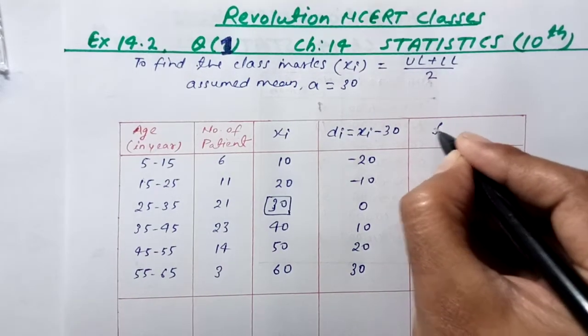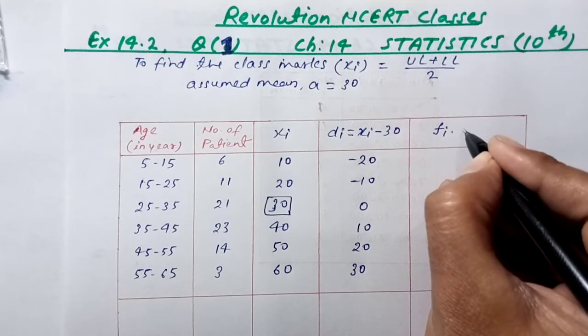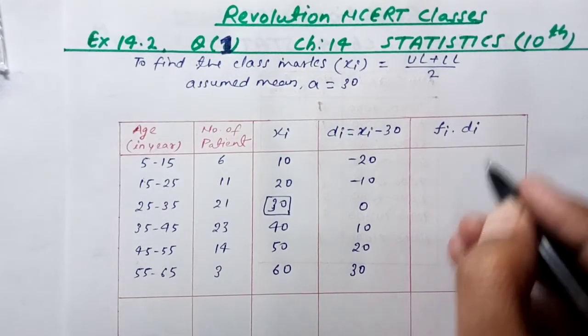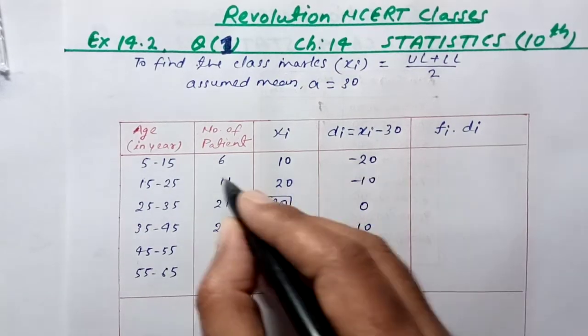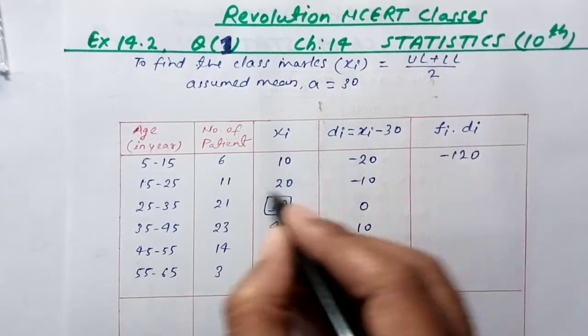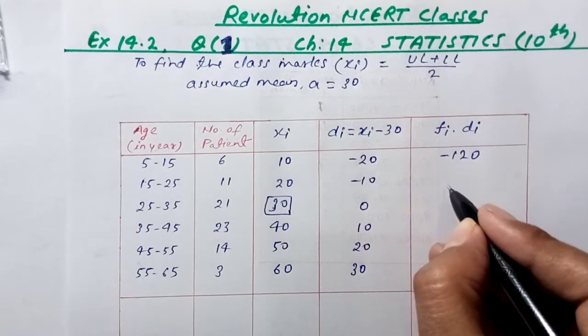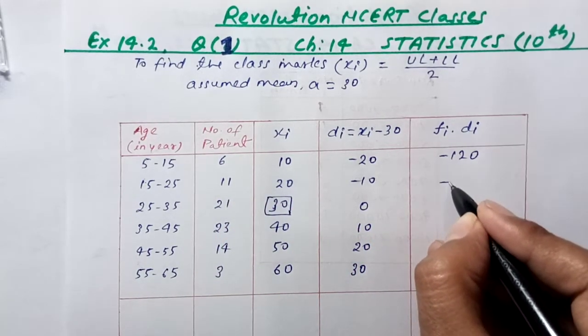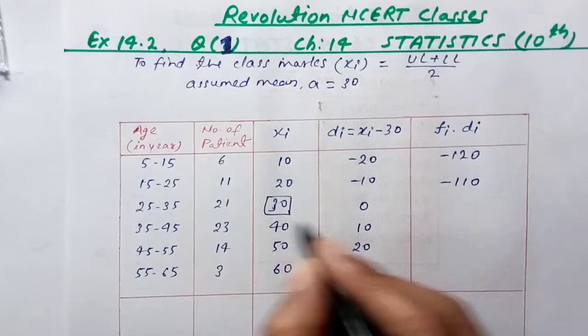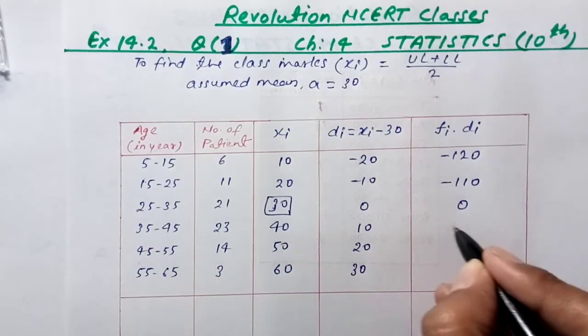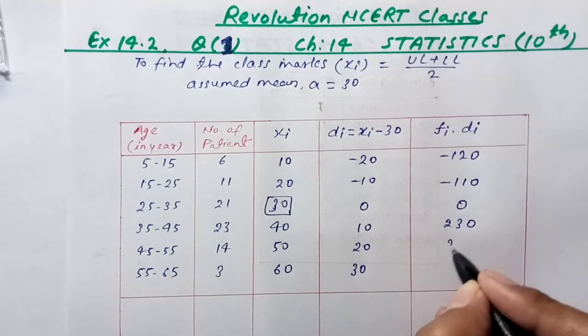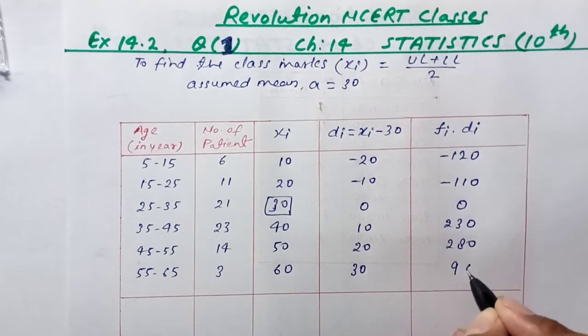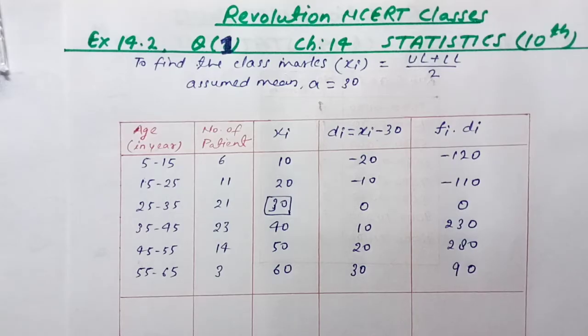The deviations are: minus 20, minus 10, 0, 10, 20, and 30. Next column is f_i times d_i because we're using the assumed mean method. So we get: minus 120, minus 110, 0, and then 230, 380, and 90.